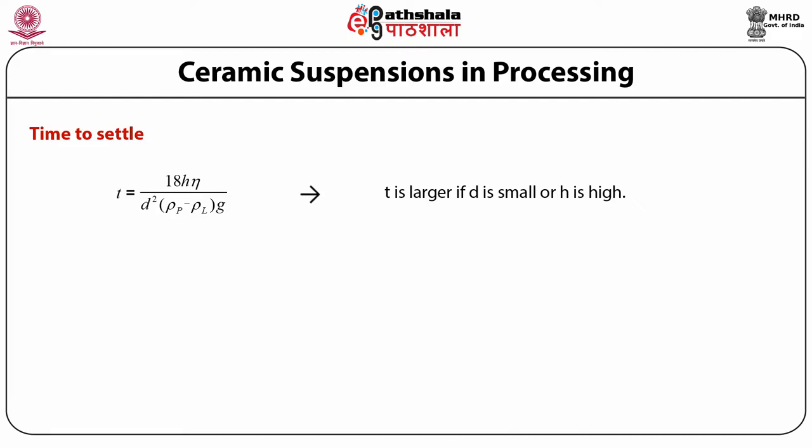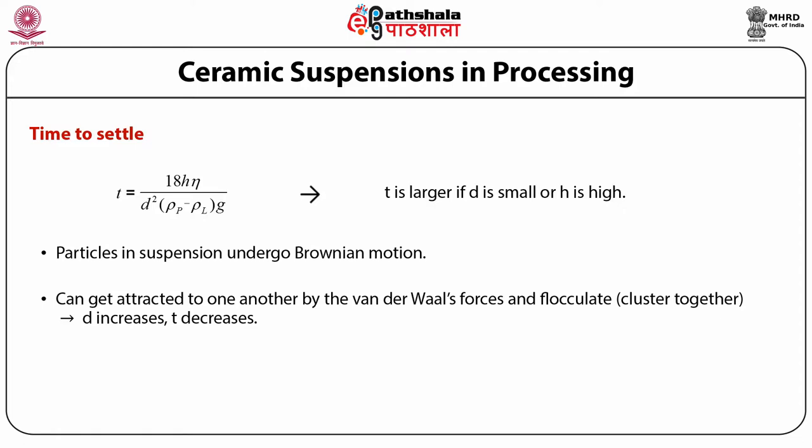The agglomeration of particles — their clustering together — increases the effective value of d, and so the time for which the particles can stay in suspension is reduced. The settling time can be increased by preventing agglomeration or by increasing the viscosity of the liquid. Particles in suspension undergo Brownian motion and can be attracted to one another by Van der Waal forces and flocculate — meaning cluster together — resulting in increase in d and decrease in t, and thus suspension stability is lost.